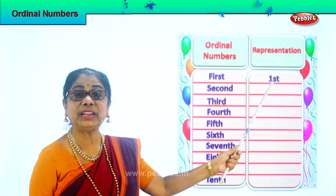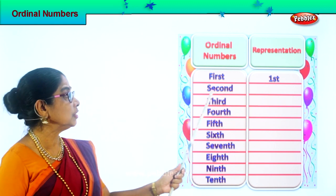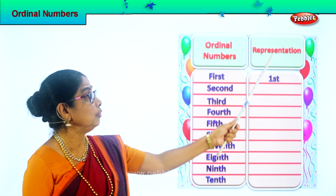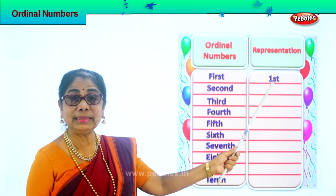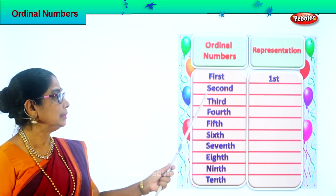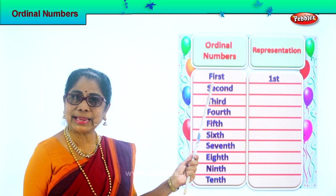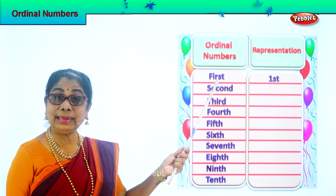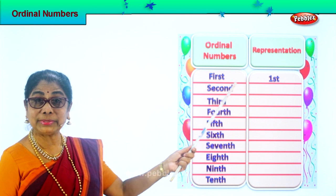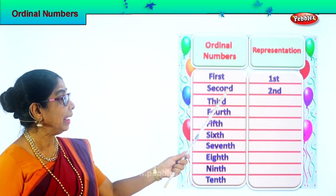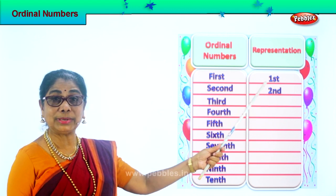You read this as first. Spell first: F-I-R-S-T. And you represent first like this — you put one and ST next to it: 1st. This is second. Spell second: S-E-C-O-N-D. Second. How do you represent second? You write two and write ND next to it: 2nd.